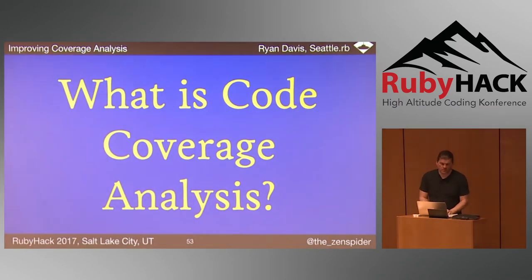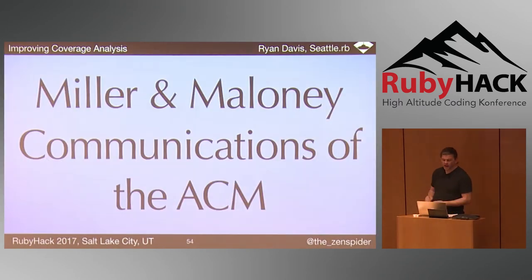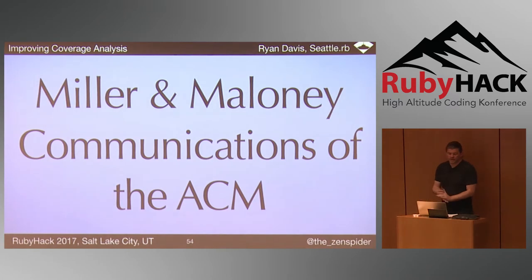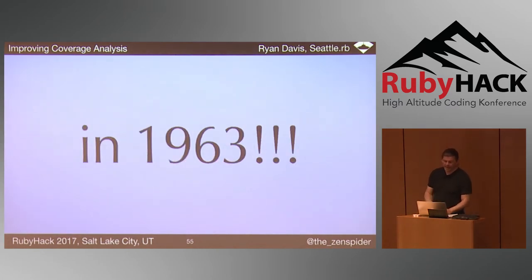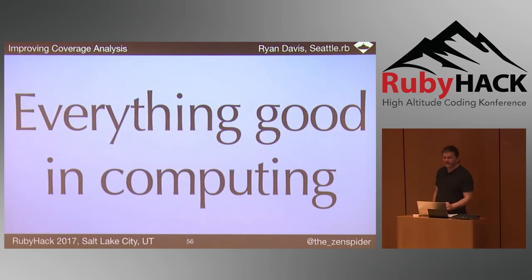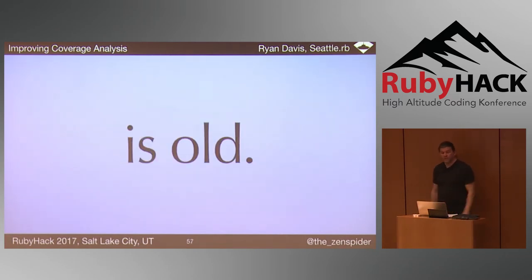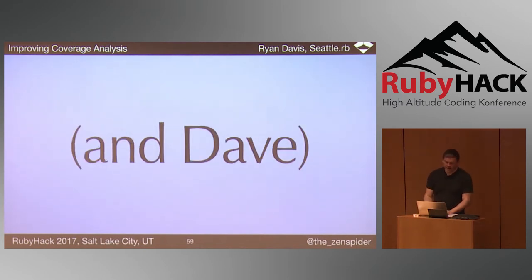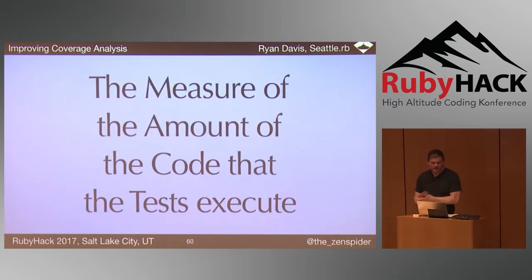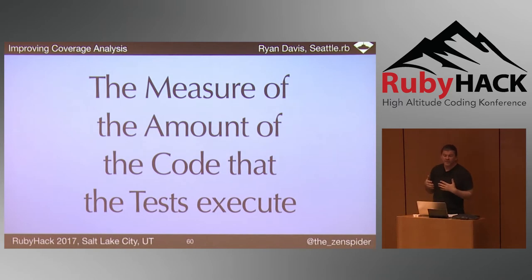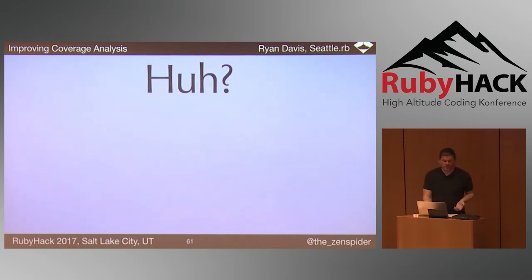What is code coverage analysis? It was introduced by Miller and Maloney in the Communications of the ACM back in 1963 — because as Dave hinted at, everything that's good in computing is old. In the simplest terms, it is the measurement of how much code your tests touch. Given an overtly simple implementation and tests for it, you can see that the tests hit both the initialize and add methods. With no branches, that's 100% coverage.